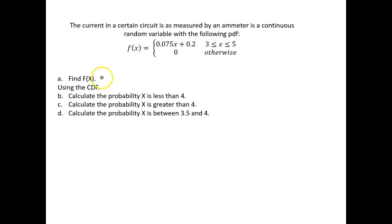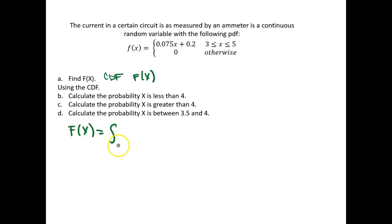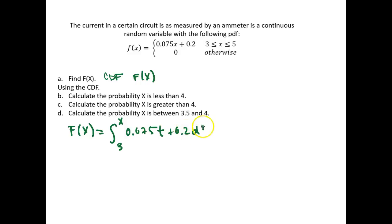The first thing we want to do is find the CDF. This is F of x, our cumulative density function. To find F of x, we simply integrate over our function from our lower bound up to our placeholder of x. So our PDF is 0.075, and I'm going to give it a placeholder of t plus 0.2, and integrate with respect to t.